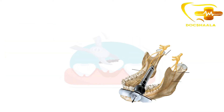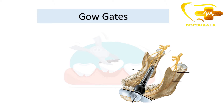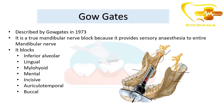From the image you can see that the injection is being inserted into a specific site. Gow Gates technique was described by Gow Gates in 1973. It is also known as a true mandibular nerve block because it provides sensory anesthesia to the entire mandibular nerve.